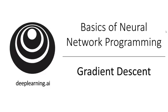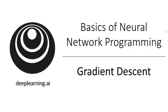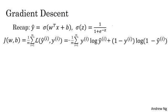You've seen the logistic regression model, the loss function that measures how well you're doing on a single training example, and the cost function that measures how well your parameters W and B are doing on your entire training set. Now, let's talk about how you can use the gradient descent algorithm to train or learn the parameters W on your training set.